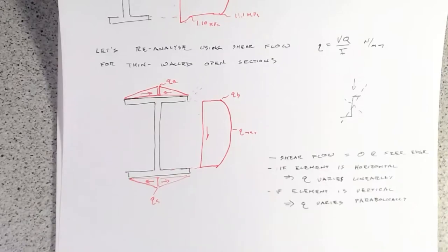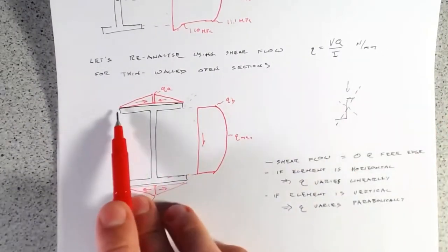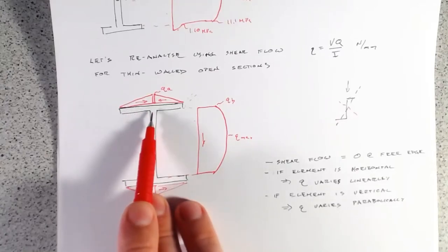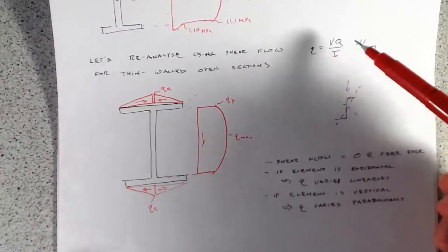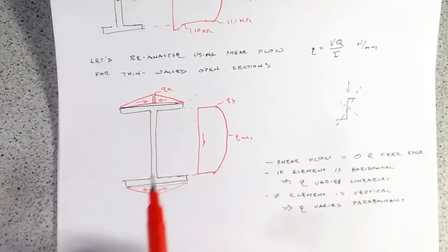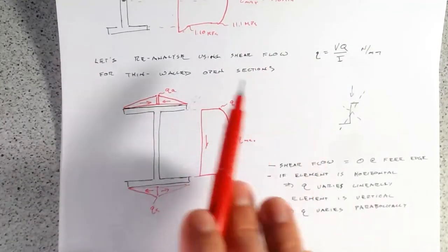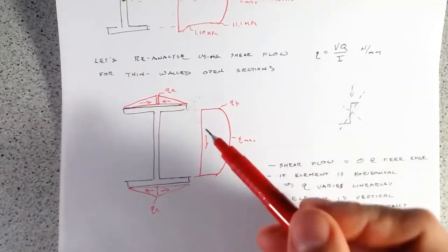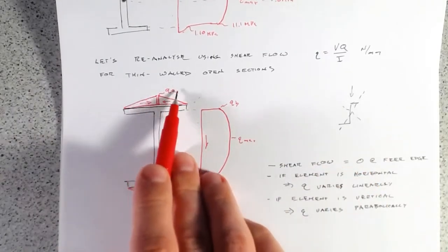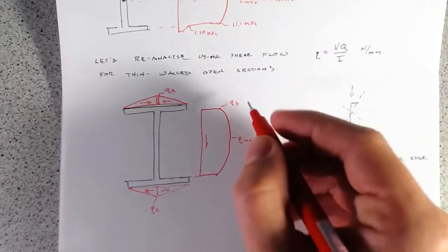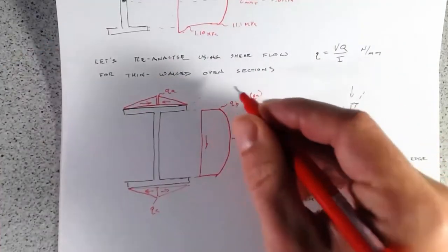One more thing to think about is equilibrium. The value QA increases linearly as our area for the Q function increases as we move across, while Y1 for this Q function doesn't change — that's why we have a linear change. With shear flow, we're really looking at a force, or force per millimeter — think of it like millimeters into the page. This value QB actually has to equal twice QA, because we've got two forces coming in from the flanges, so QB equals 2 times QA.